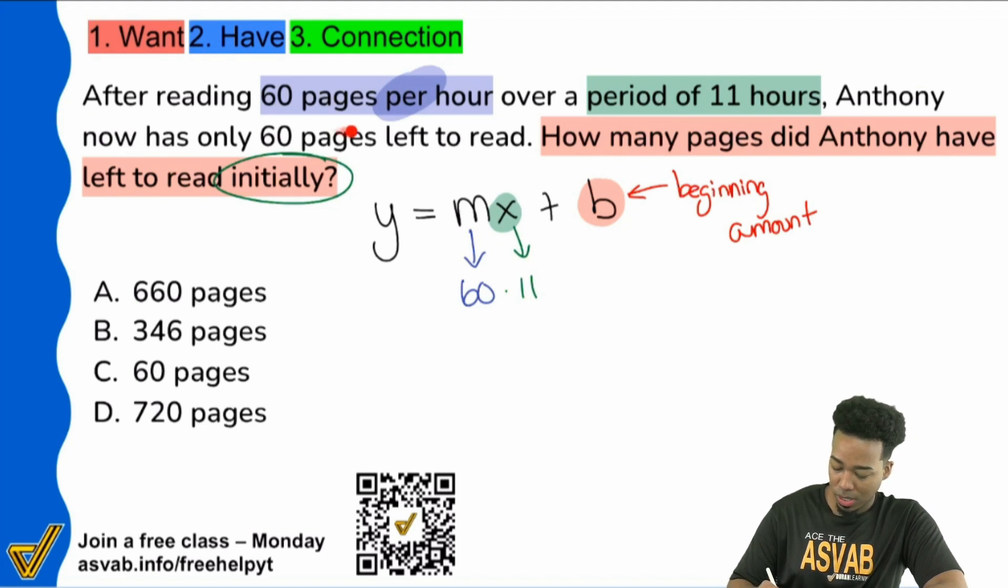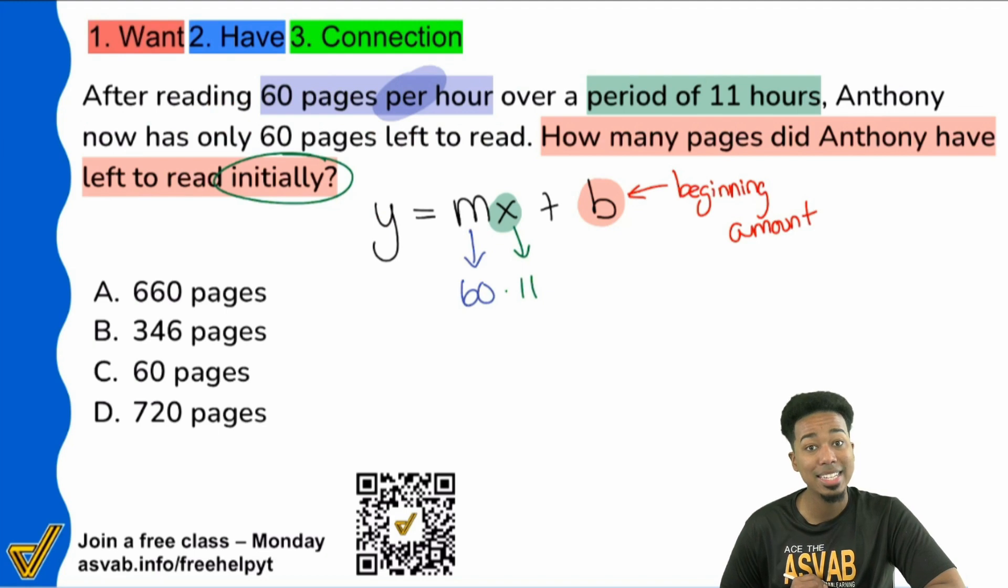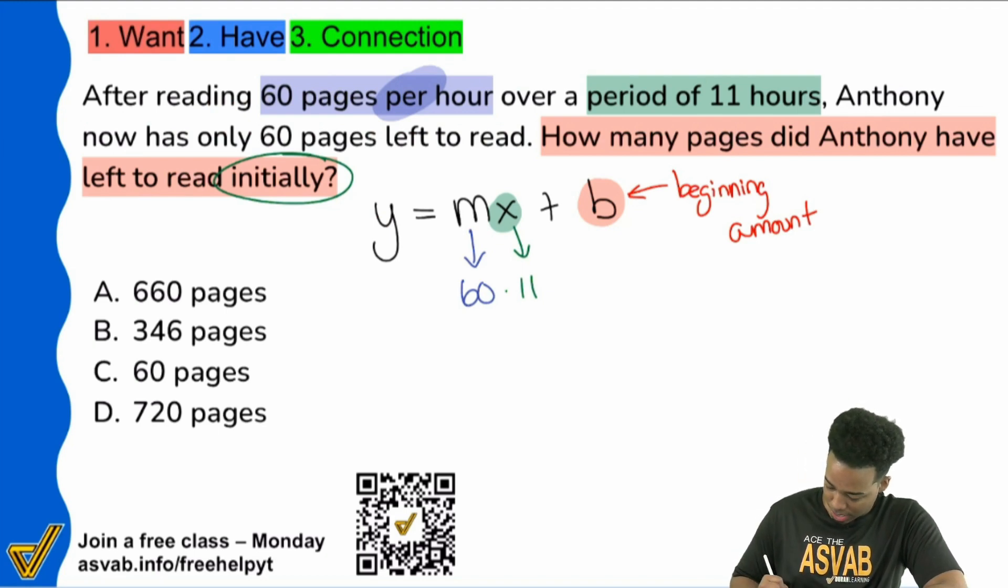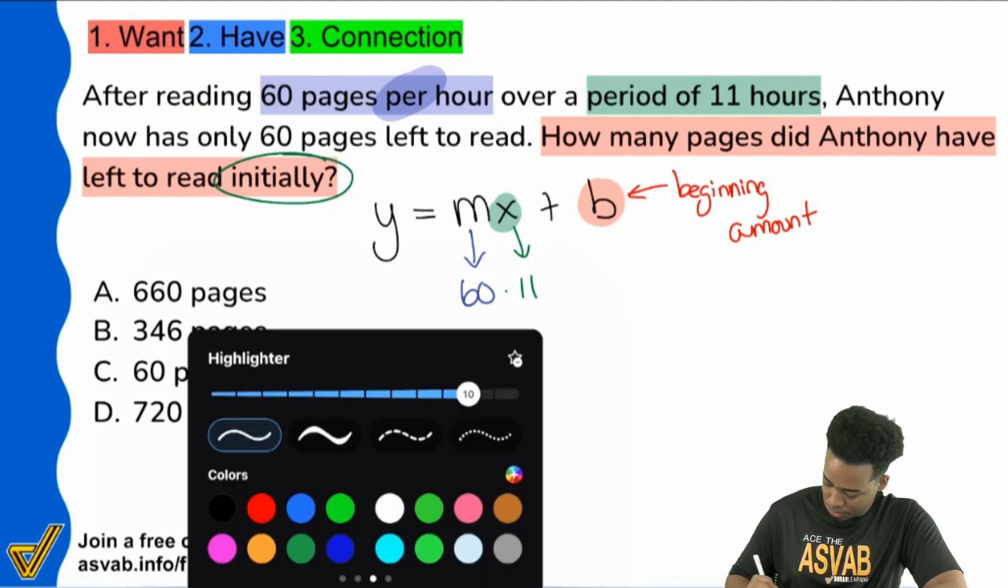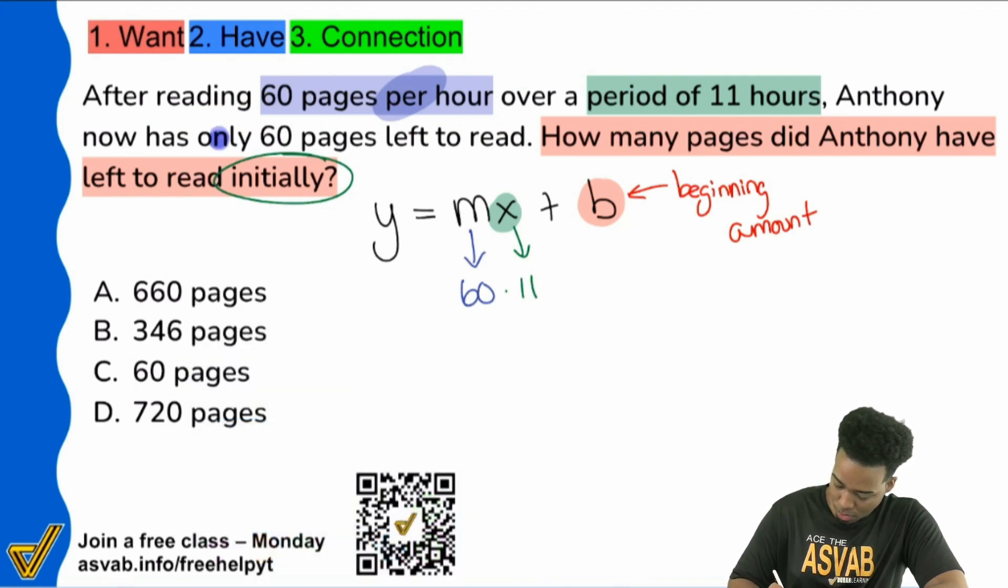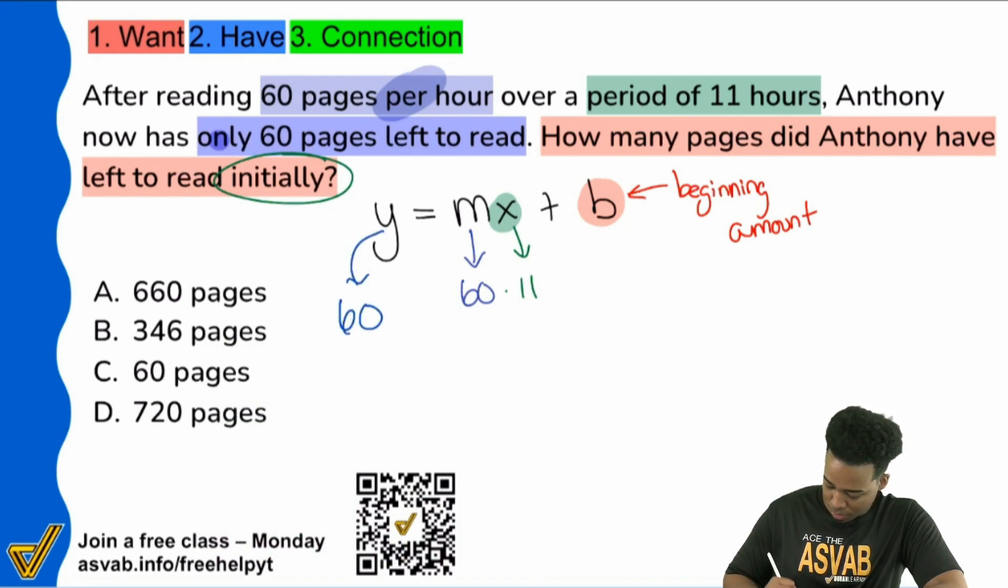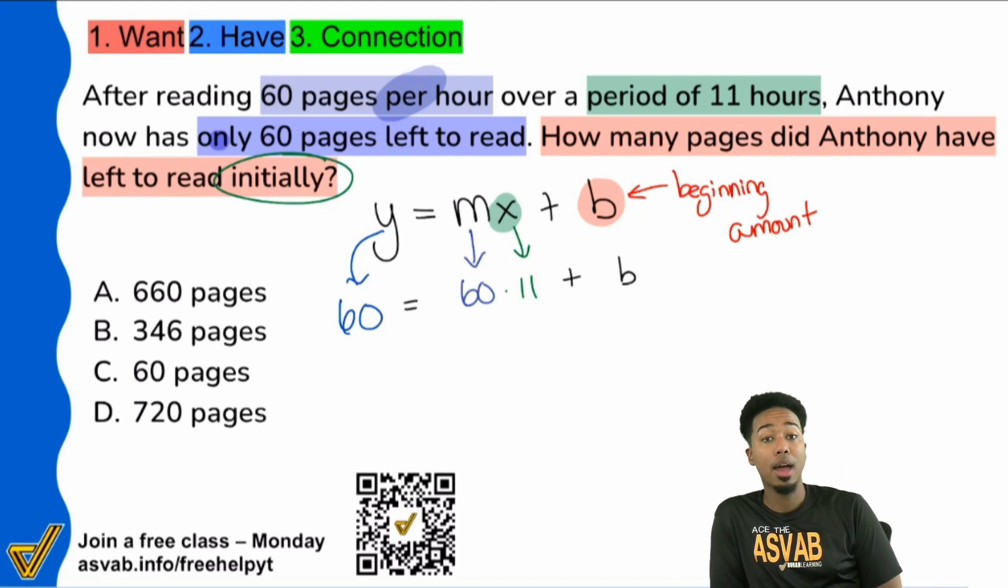And then it says, Anthony now has only 60 pages left to read. So right here, Y, that is 60. So boom. I'm going to go ahead and write that out as well. Let me go ahead and take blue. Only 60 pages left to read. So we'll go ahead and plug that right there. So right there, and then plus B. And now we're looking for how many pages Anthony had left from the very get-go. Cool.